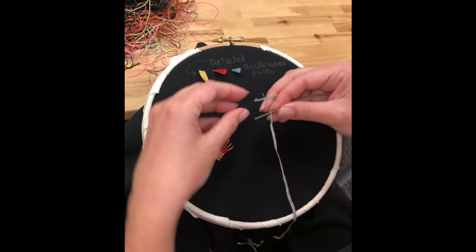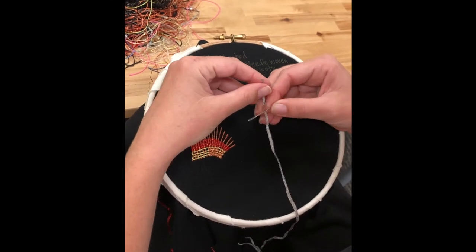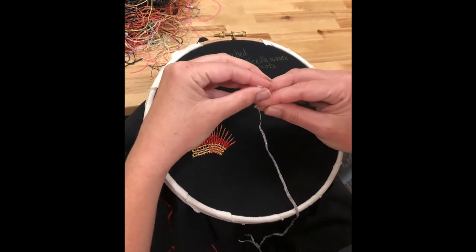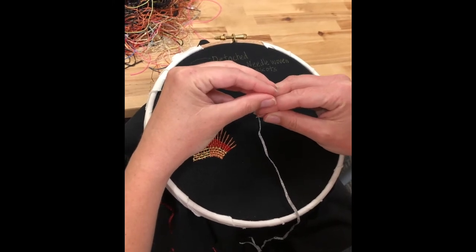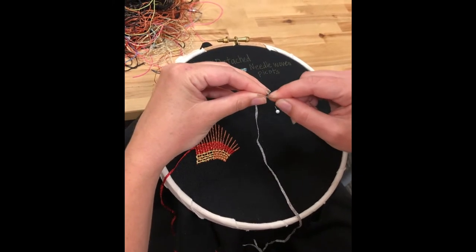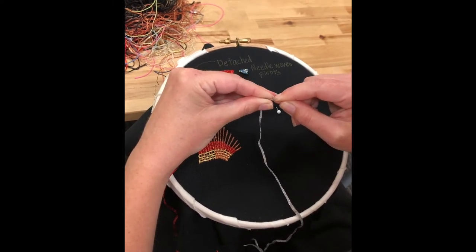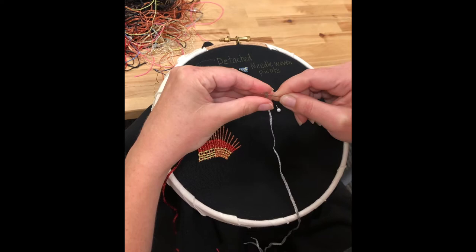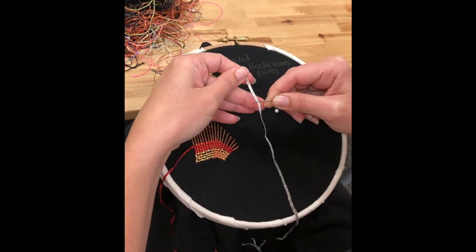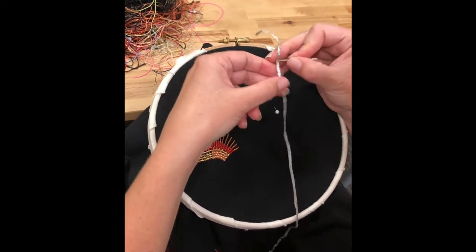I'll go over threading the needle again. So what I explained in a previous video is that I like to take the thread, bring it down between my fingers, nice and tight, so I can barely see the thread right there. And then as I slowly open my fingers, that's just going to pop right through the needle like that, kind of like magic, once you get used to it anyways.